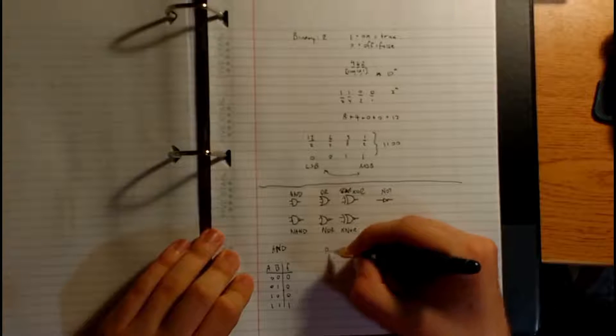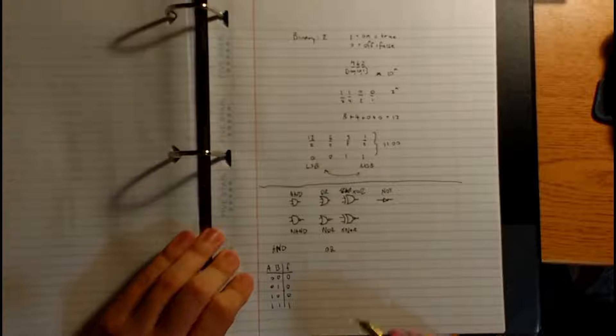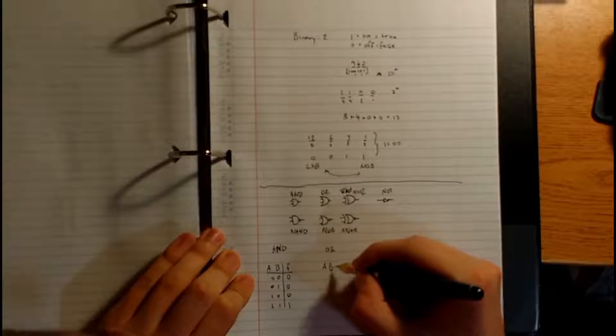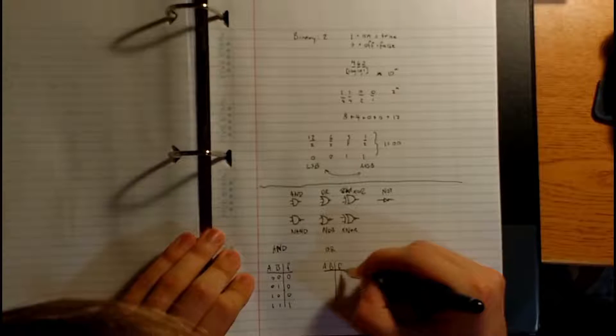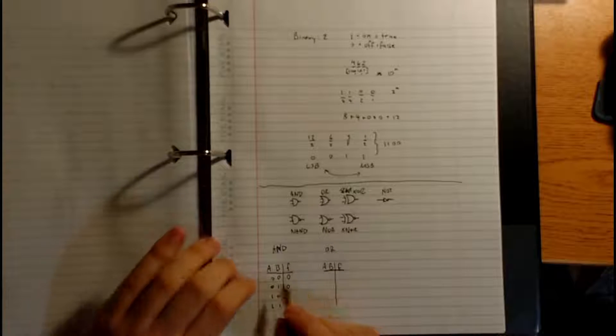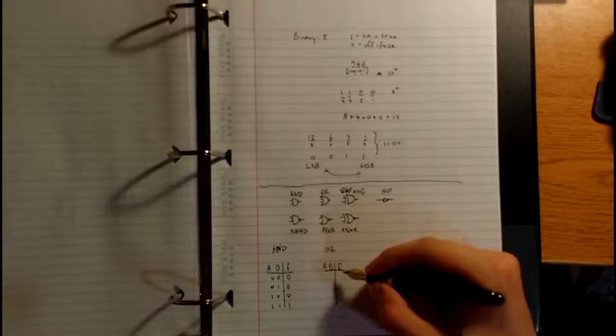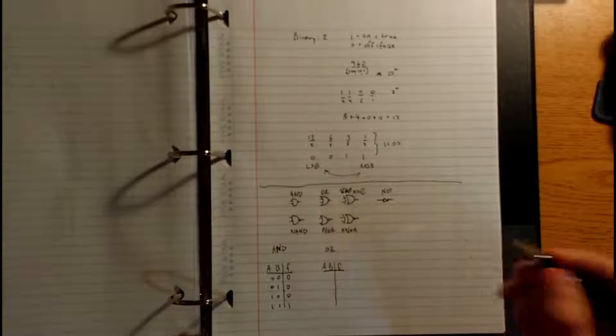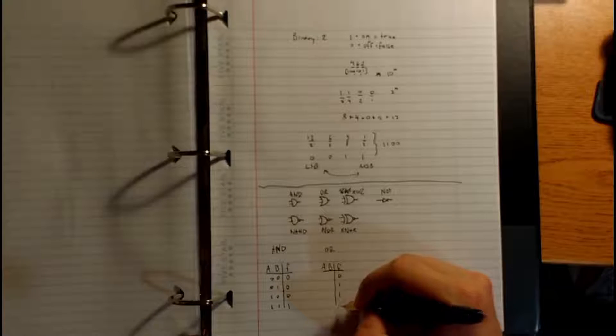So let's take a look at OR. A, B, F. For OR, I'm just going to assume that we're going in the same order, 0, 0, 0, 1, 1, 0, 1, 1. For 0, 0, A is not asserted, B is not asserted, 0. For 0, 1, A is not asserted, but B is asserted, so we've got 1. A is asserted, 1, and then they're both asserted. So at least one of them is on, so it's still 1.